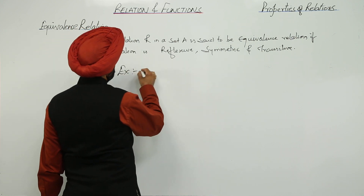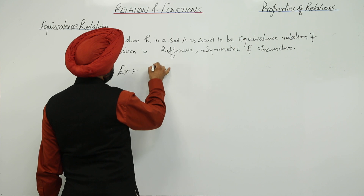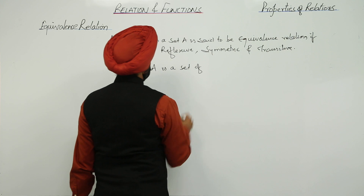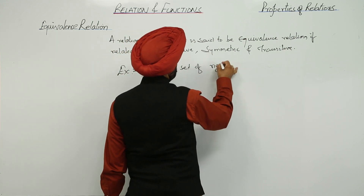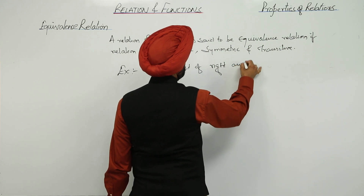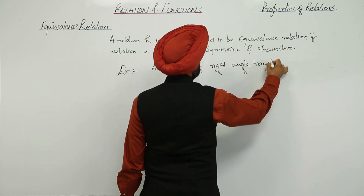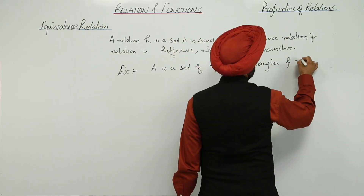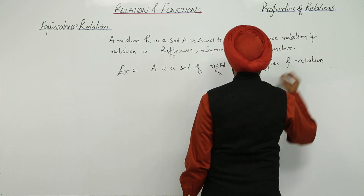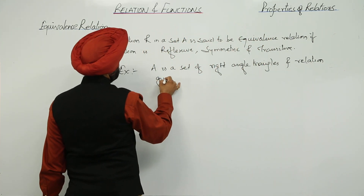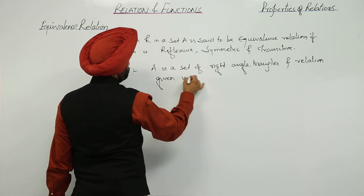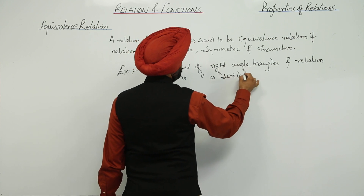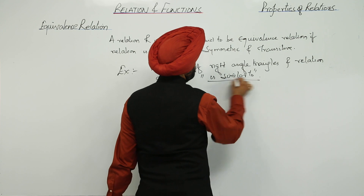Suppose A is a set of right angle triangles, and the relation given is 'is similar to.' Now this is the relation given: is similar to.